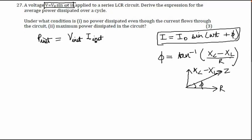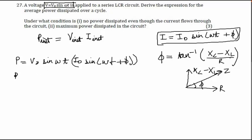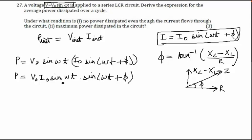Now knowing the instantaneous current and voltage, we multiply them to find instantaneous power. So P = V0 sin(ωt) × I0 sin(ωt + φ), which gives P = V0·I0 · sin(ωt)·sin(ωt + φ). Applying the 2·sin·sin trigonometric identity from mathematics, we get P = (V0·I0 / 2) [cos(φ) − cos(2ωt + φ)].